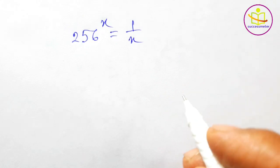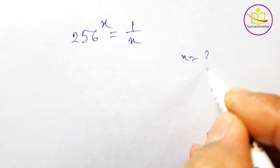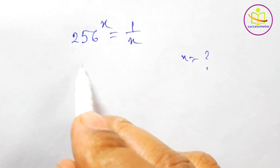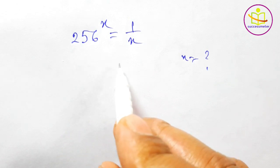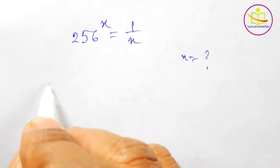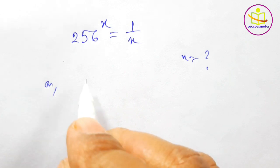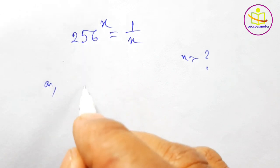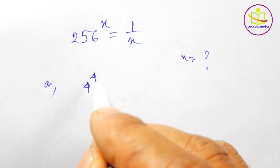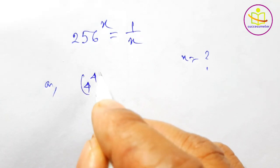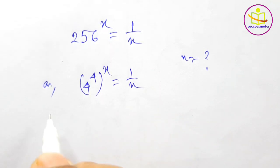Welcome to Success Meter. We have to find the value of x, where 256 to the power x is equal to 1 by x. We can write 256 as 4 to the power 4, so (4^4)^x is equal to 1 by x.